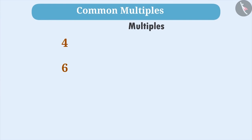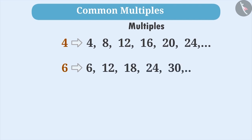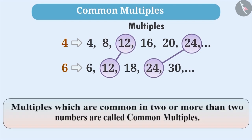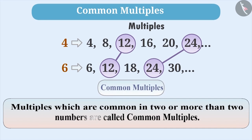Let's find multiples of 4 and 6. Multiples of 4 are 4, 8, 12, 16, 20, 24, etc. And multiples of 6 are 6, 12, 18, 24, 30, etc. We can see that the numbers 12, 24, etc. are common among the multiples of both 4 and 6. The multiples which are common among the multiples of 2 or more than 2 numbers are called common multiples.